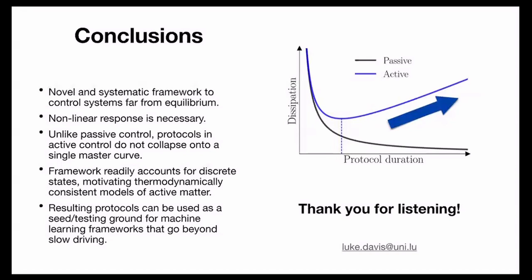To conclude: we've built a novel and systematic framework to control systems far from equilibrium. Doing this correctly requires nonlinear response, which is interesting because nonlinear responses in non-equilibrium systems carry signatures of the dynamics. Unlike passive control protocols, active control protocols do not collapse onto a single master curve. Our framework readily accounts for discrete states, motivating thermodynamically consistent models of active matter. The resulting protocols can be used as a seed and testing ground for machine learning frameworks that go beyond slow driving. If you take away one image from this talk, it would be the illustration showing the natural minimum in heat dissipation — that contains all the essential physics.